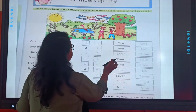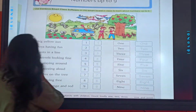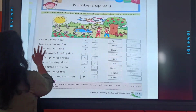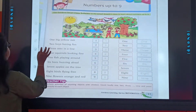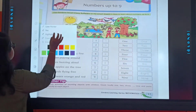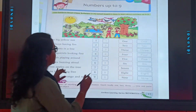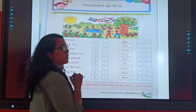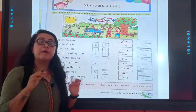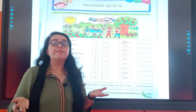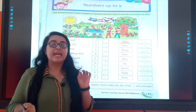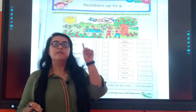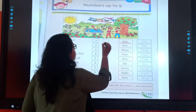2. Wait a second. You are also writing with pencil, so I also need a pencil to write. Okay? See. O, N, E. 1. Repeat after me. O, N, E. 1. Understood?